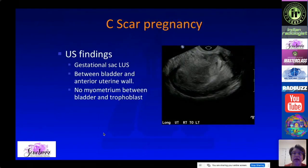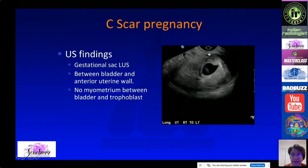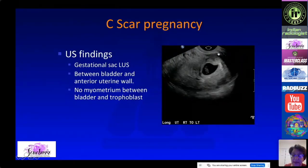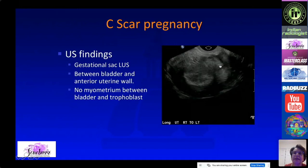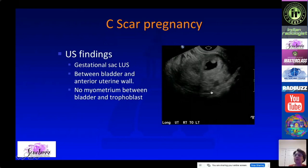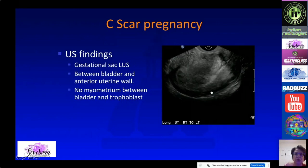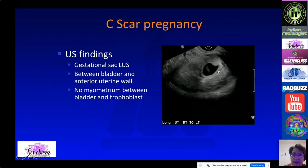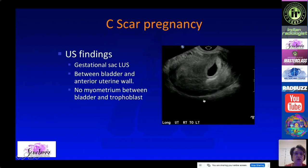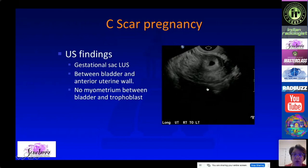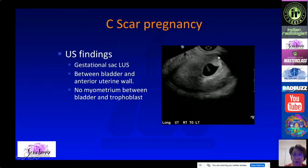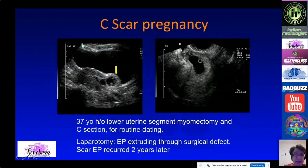On ultrasound you will see a sac implanted into the c-section scar — it is lower than expected. Unlike cervical ectopic, the c-section scar implantation is a bit more superior and oriented anteriorly toward the bladder, where the scar normally is. If the pregnancy grows, there will be little or no myometrium between the pregnancy and the bladder.